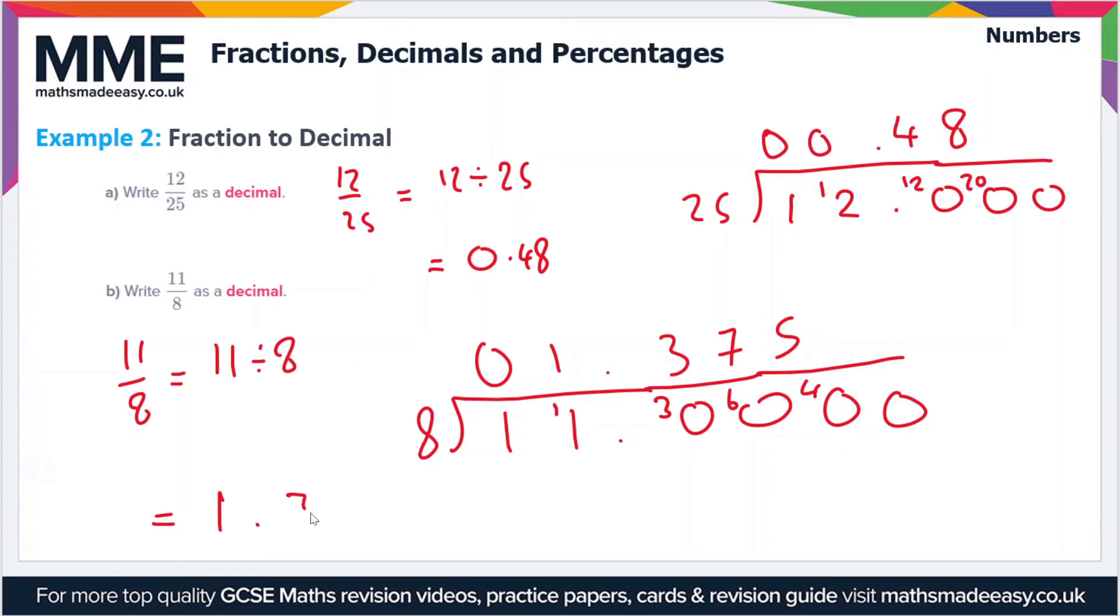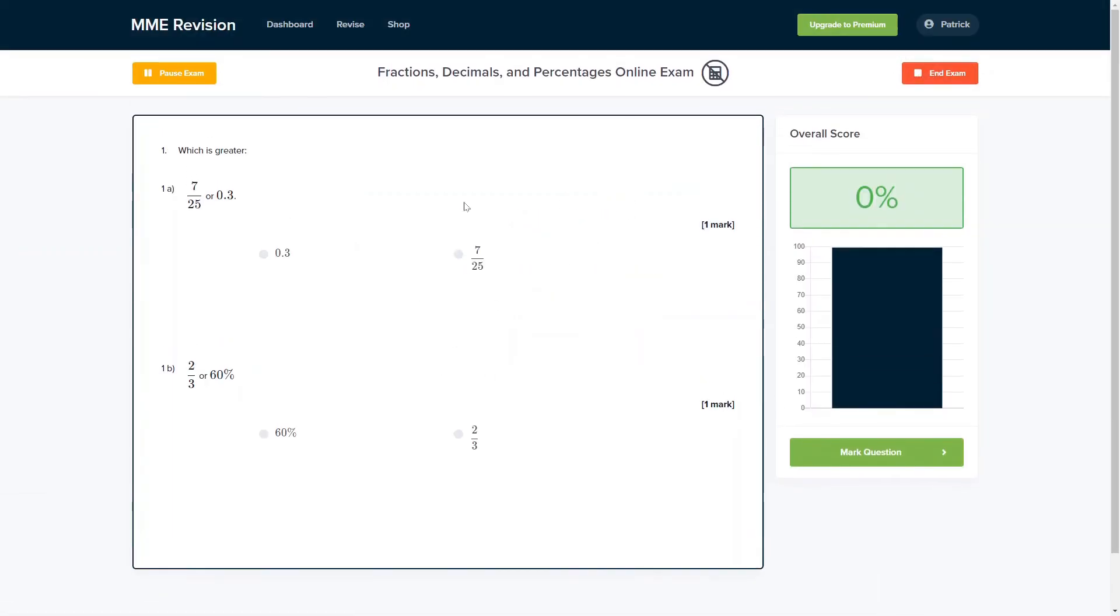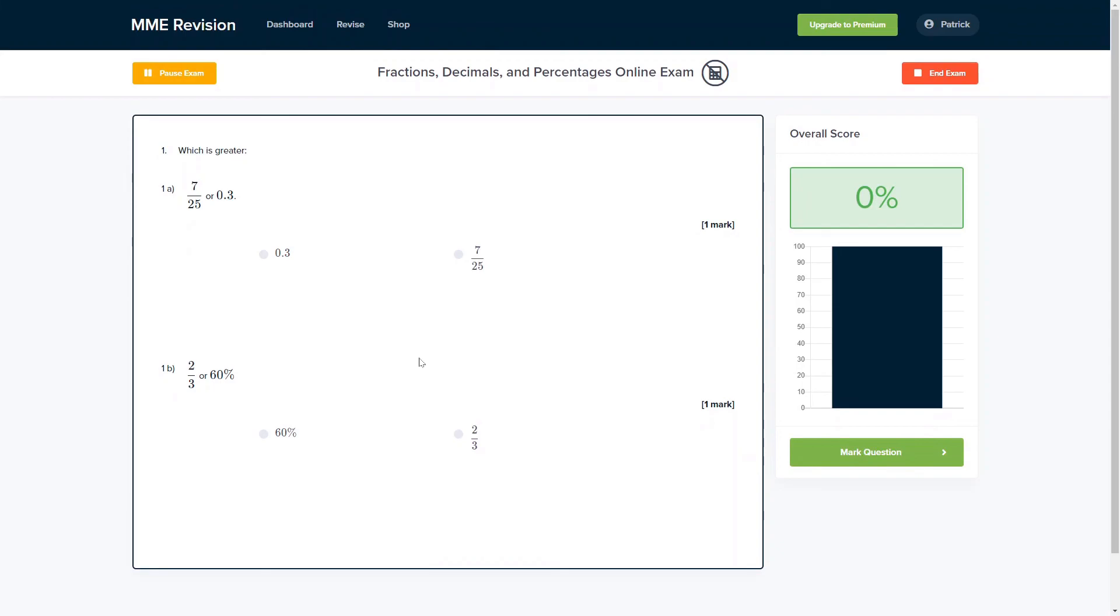If you're feeling good on this topic and you want to get some practice in, you can do so with our online exam. It's available through our revision platform. Here you'll find loads of different questions to have a go at. There's a variety of different question types as well, and you'll get instant feedback on each and every one of them. It's a really good way of keeping track of where your weaknesses are and where you can improve. So if you're feeling confident and ready to take the test, then click the link below.